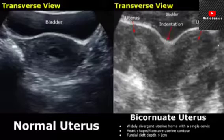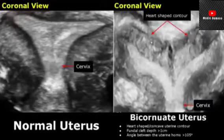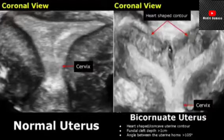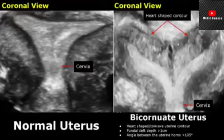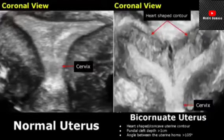On a 3D coronal view of a bicornuate uterus, we can clearly see a heart-shaped uterine contour. The fundal cleft has a depth greater than one centimeter, and the uterine horns are widely divergent. The angle between the uterine horns is obtuse, greater than 105 degrees, and both uterine horns are connected to a single cervix.